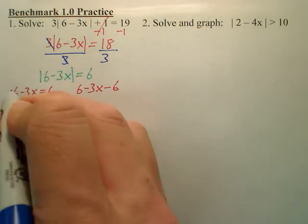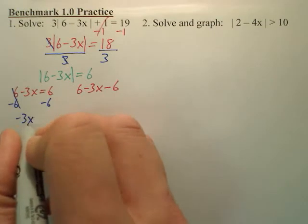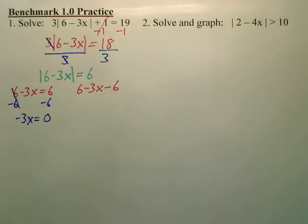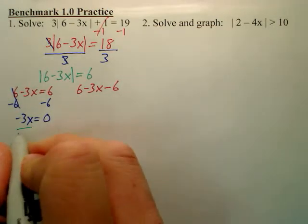So when I minus 6 from both sides, I get negative 3x equals 0, and that confuses some people. They go, what does that equal? Well, we just divide by negative 3. Watch. You just divide by negative 3.